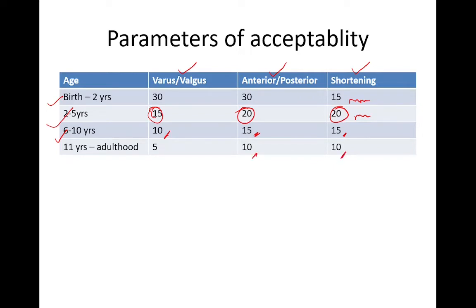From this table, you can see that as the child grows, the acceptability criteria become narrower. Younger children have higher potential for bone remodeling, whereas in older children the potential for remodeling decreases, hence the parameters of acceptability also become narrower.